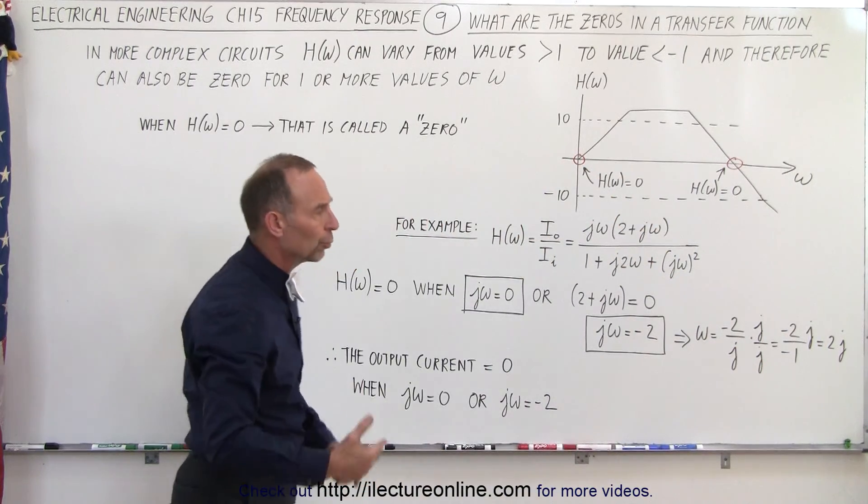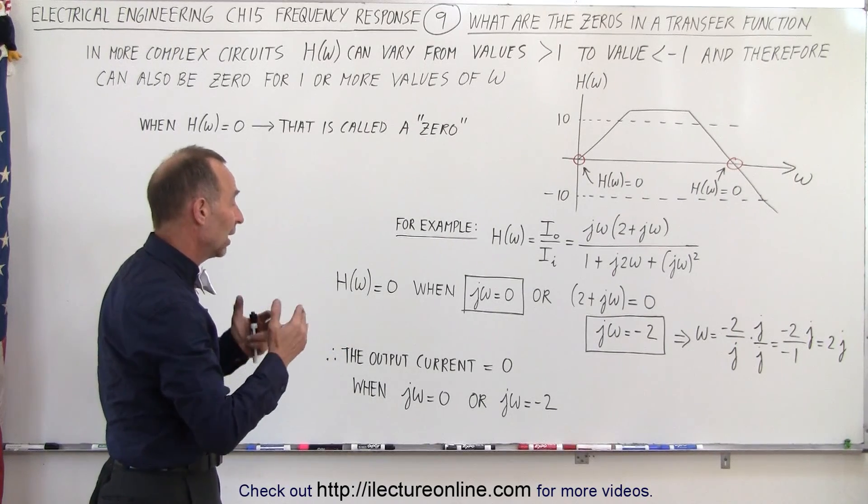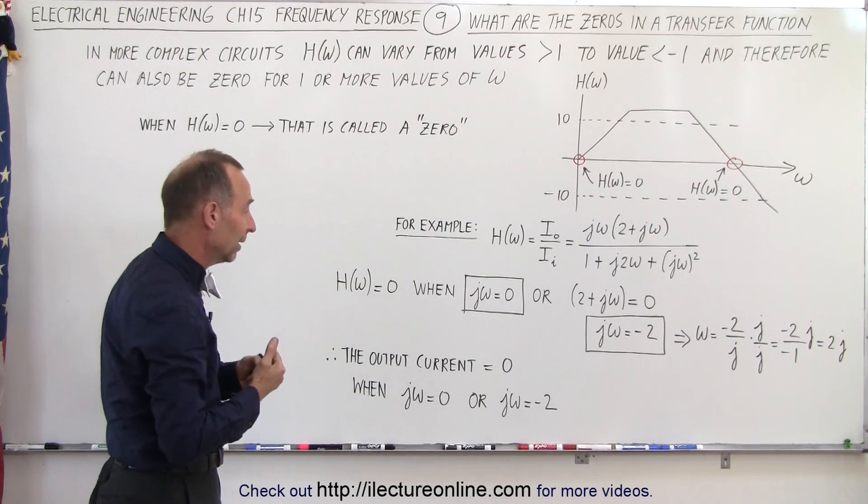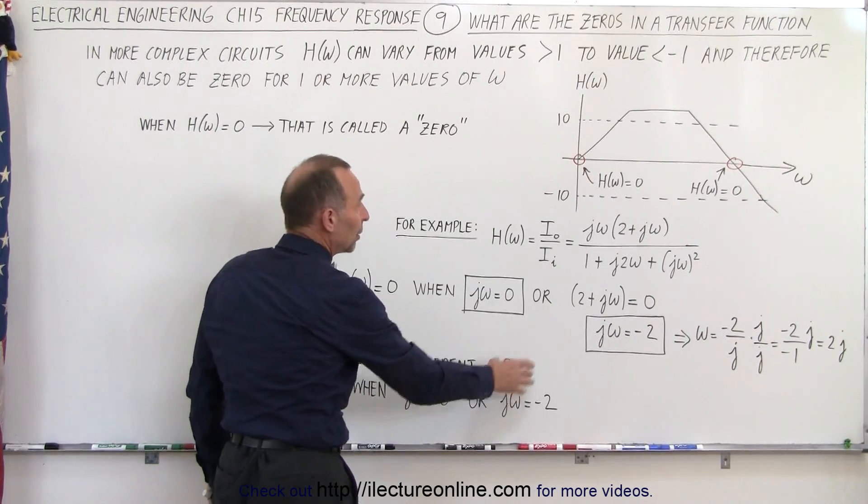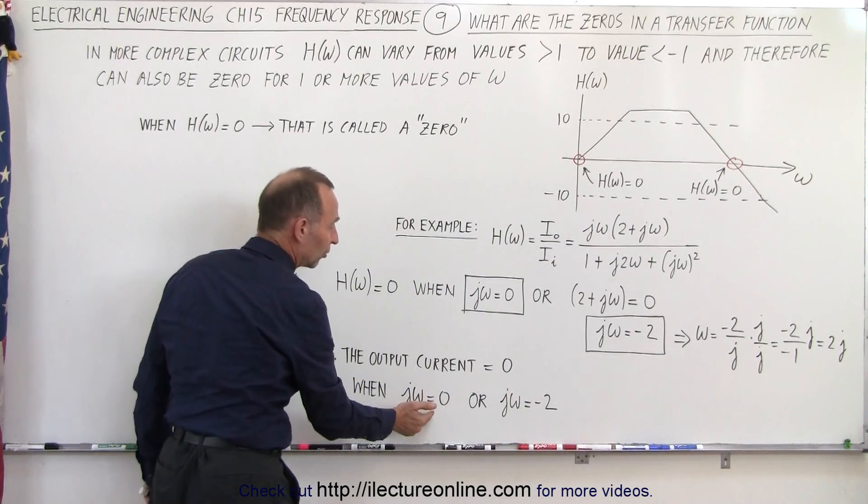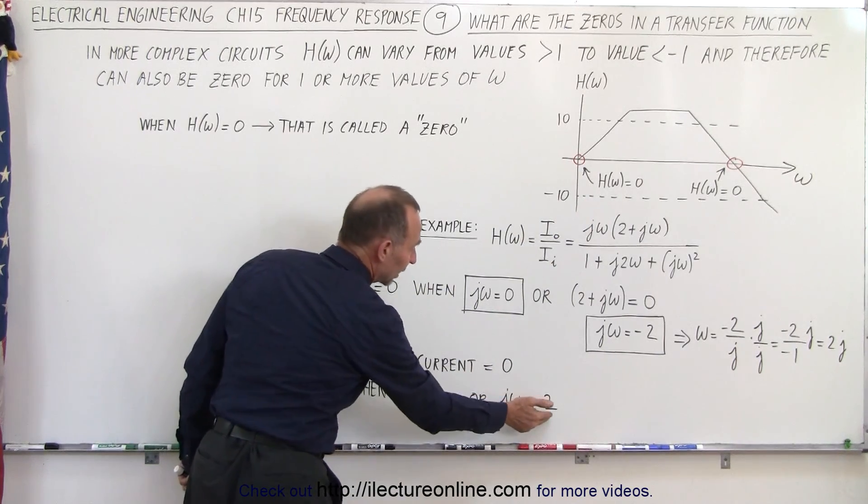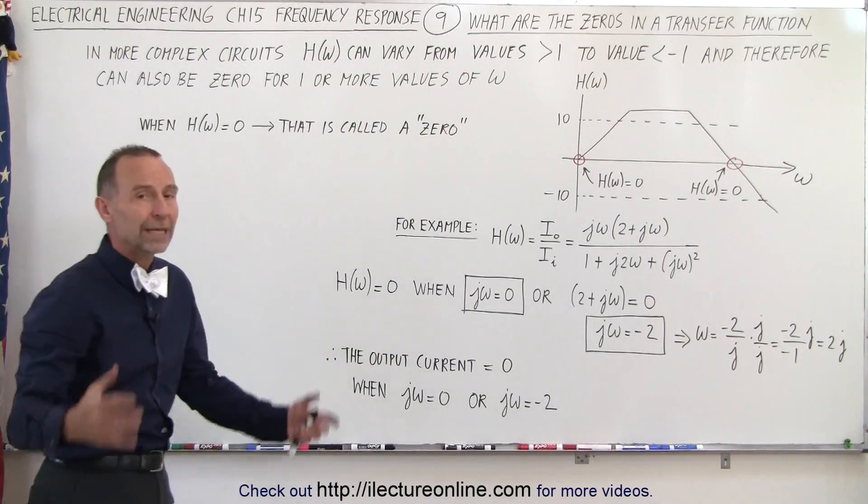Later on, we'll show you what the actual meaning of all that is, but for now, we'll just leave it like that. It's just good to realize then that there are going to be cases where the output current will be equal to 0. That will be when the numerator is equal to 0. And in this case, when jω is equal to 0, or when jω is equal to negative 2, that's when the output current in this particular example will be equal to 0.